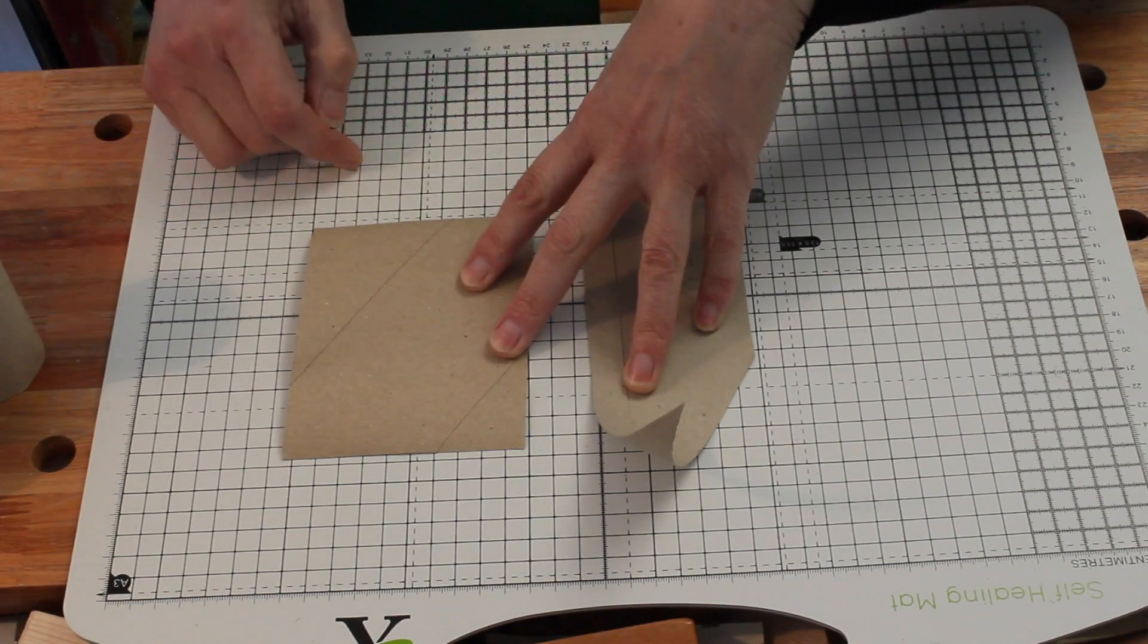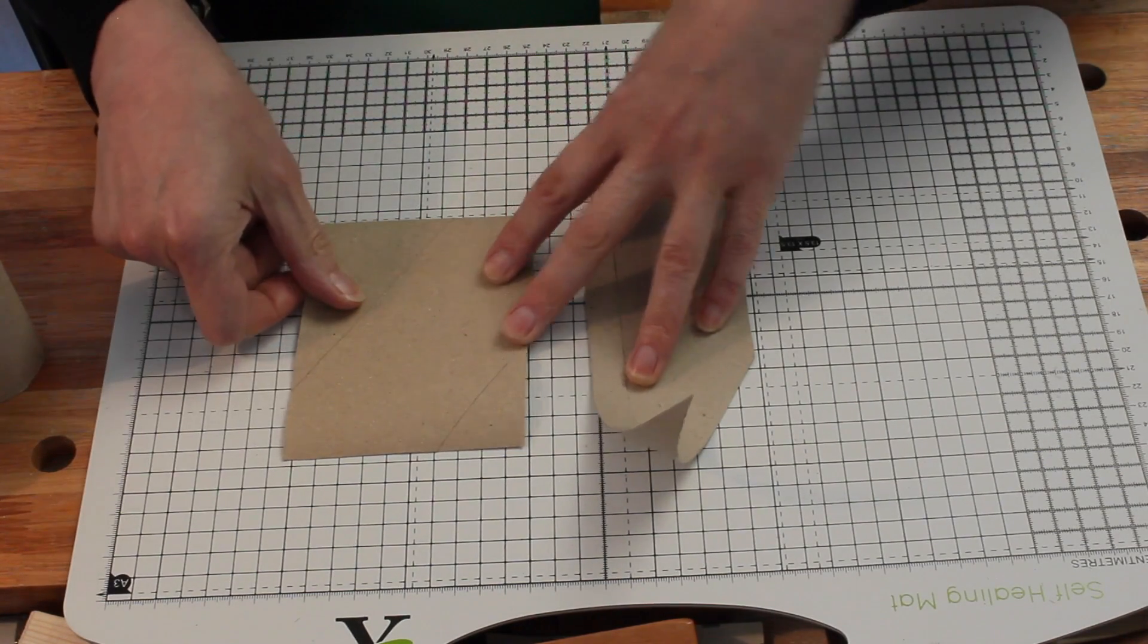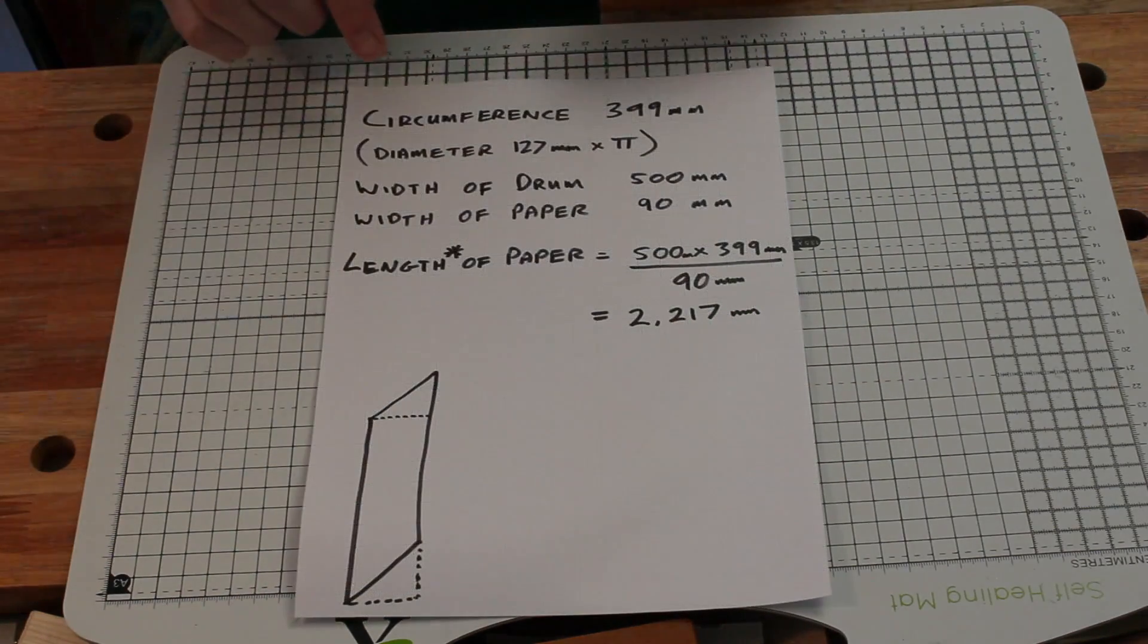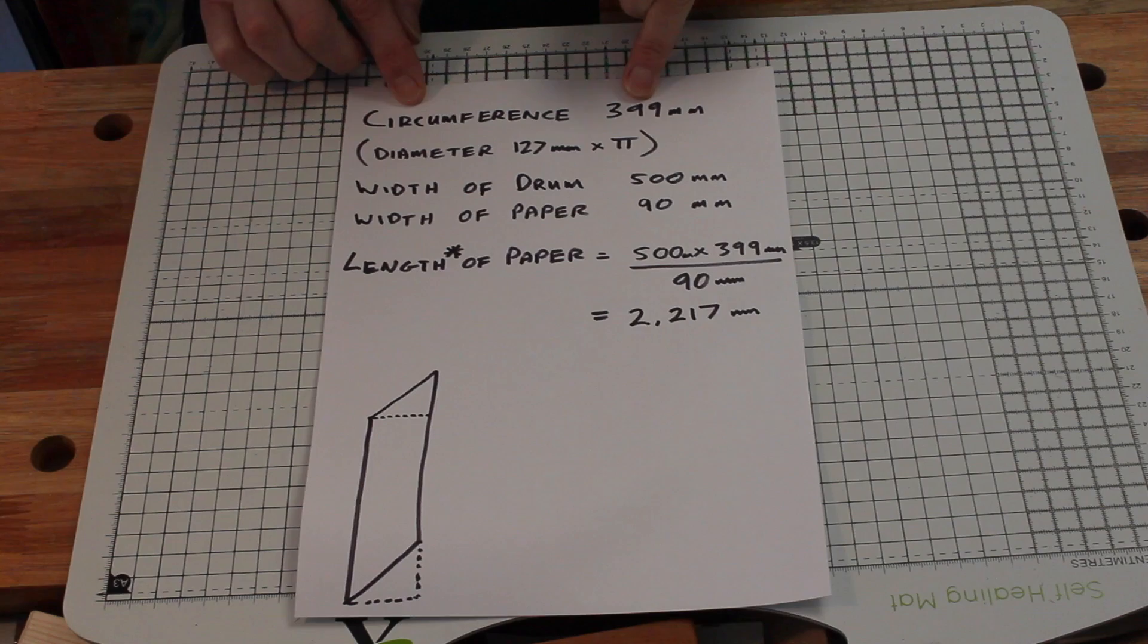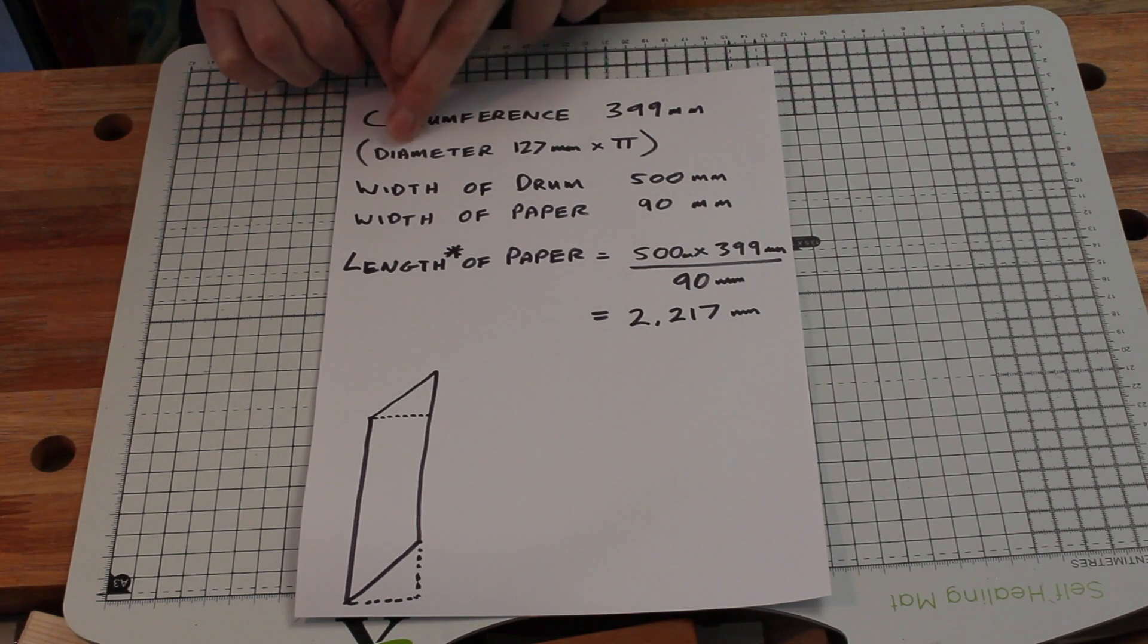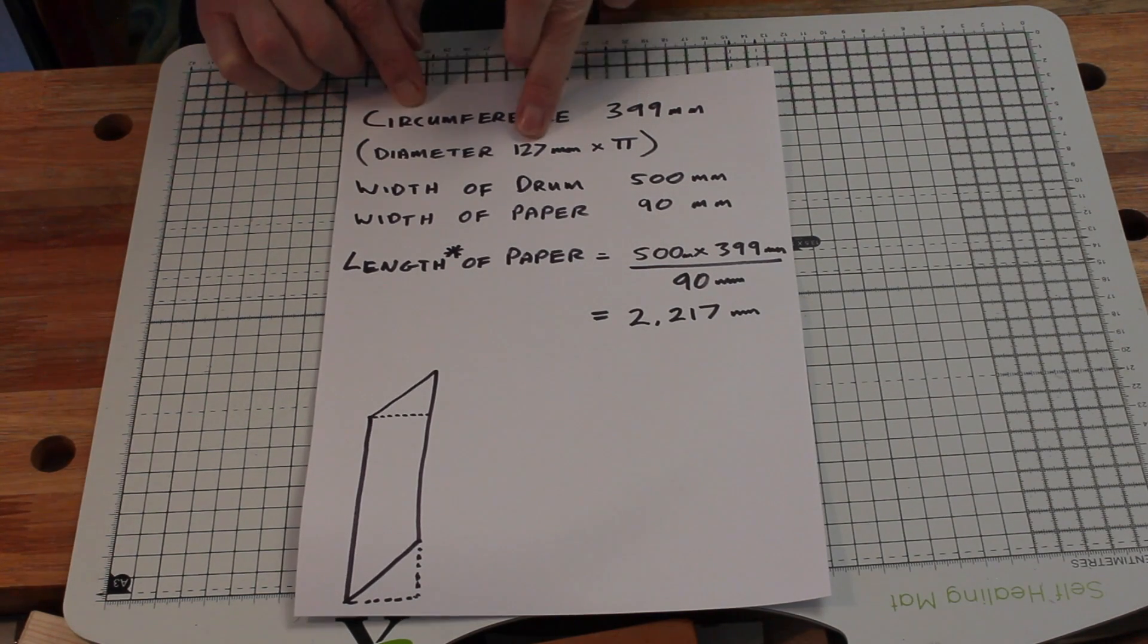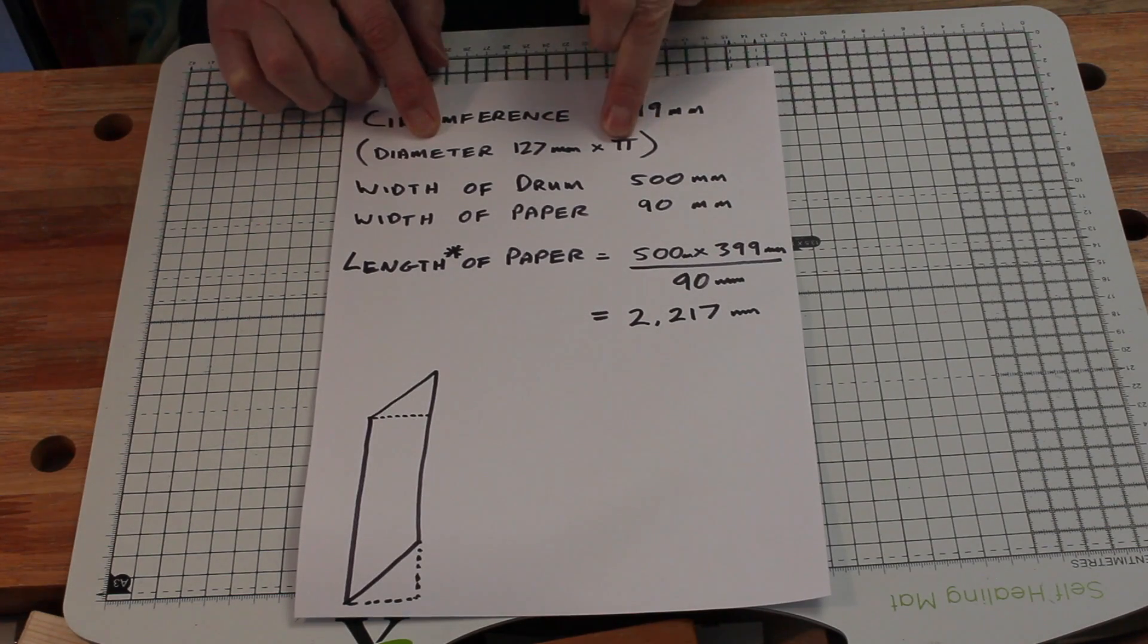So let's see how that works to get the dimensions out. So we know the circumference is 399 millimeters because I've measured it. You could, of course, if you know the diameter, 127 millimeters, that's actually 5 inches. You can just multiply it by pi.